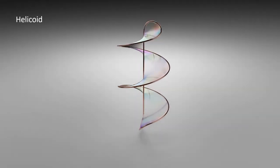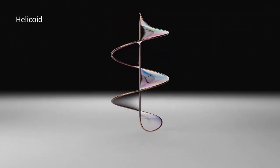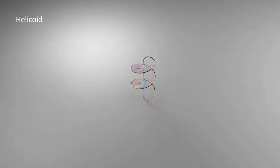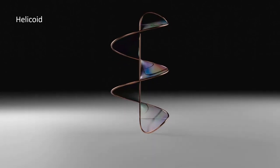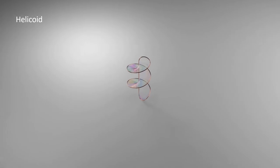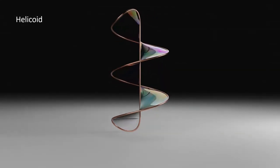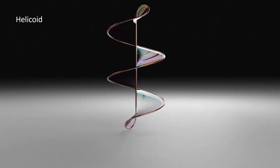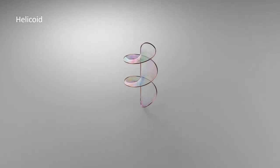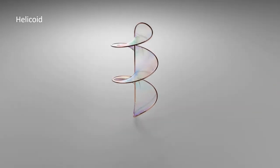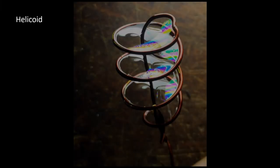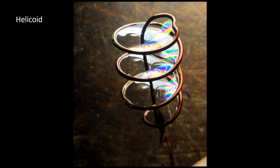The next example is a helicoid. A helicoid interestingly is the second ruled surface which is also a minimum surface. By ruled surface we mean that this helicoid interface can be made by tracing the locus of a straight line as it is moved through the screw-like path along the wire.